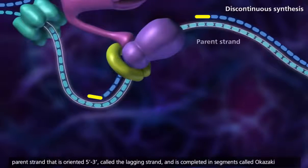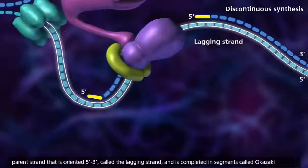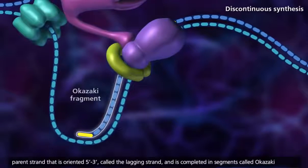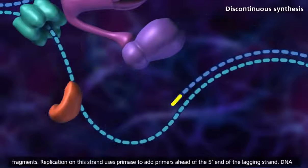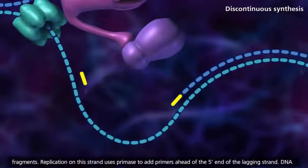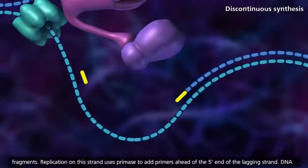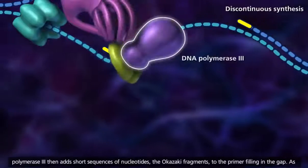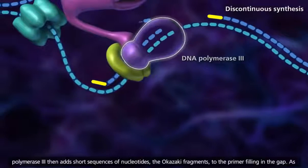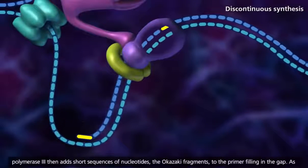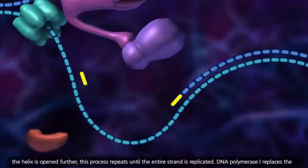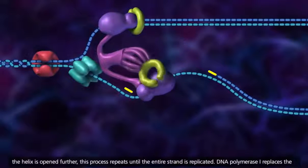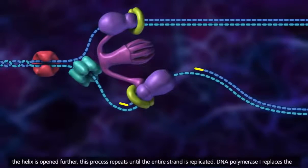Discontinuous synthesis occurs on the parent strand that is oriented 5' to 3', called the lagging strand, and is completed in segments called Okazaki fragments. Replication on this strand uses primase to add primers ahead of the 5' end of the lagging strand. DNA polymerase 3 then adds short sequences of nucleotides, the Okazaki fragments, to the primer filling in the gap. As the helix is opened further, this process repeats until the entire strand is replicated.